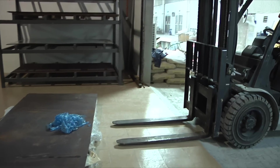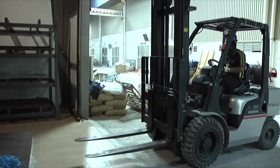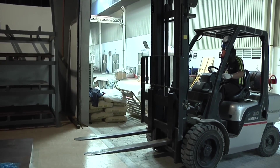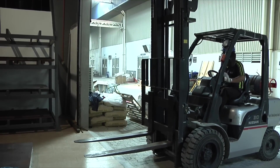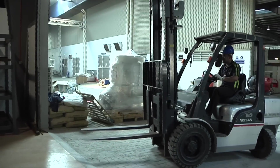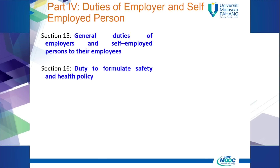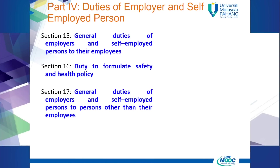Let us highlight the most important sections and penalties if violation occurs under OSHA 1994. Section 16 describes the duties of employer and self-employed person to formulate the policy. Section 17 discusses the duties of employer to persons other than their employees.